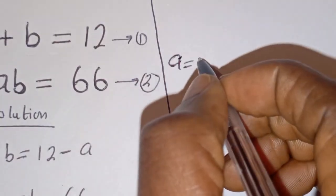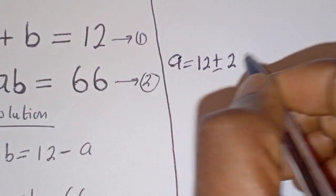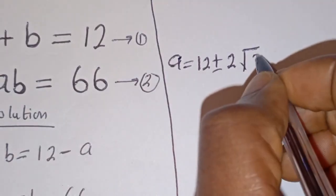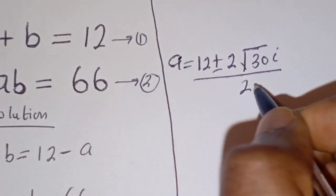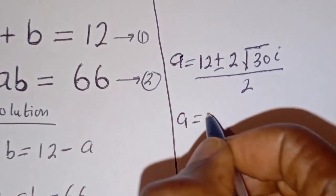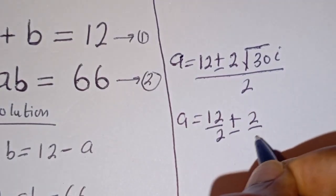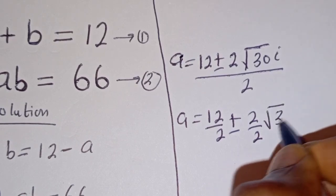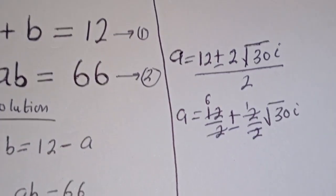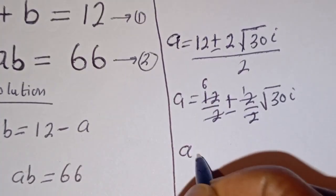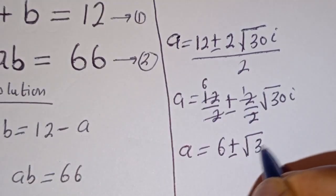A equals 12 plus or minus — square root of 4 is 2 — so 2 times square root of 30 times i, divided by 2. Then we have A equals 12 divided by 2, plus or minus 2 divided by 2 times square root of 30 times i. This simplifies to A equals 6 plus or minus square root of 30 times i.